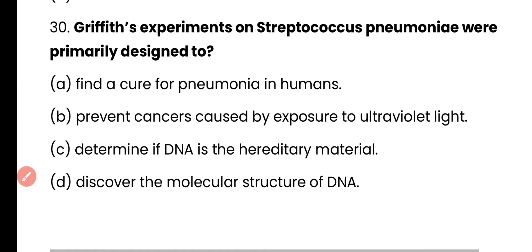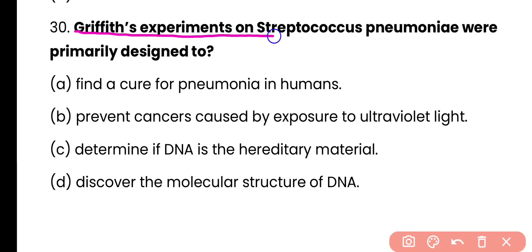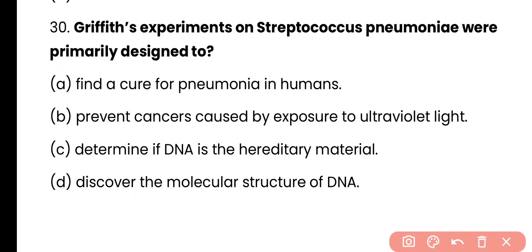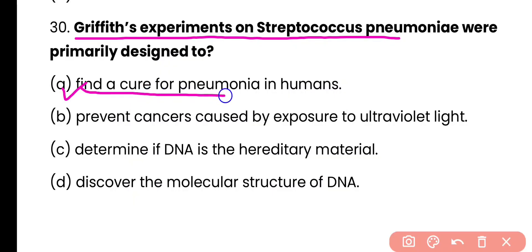Question number 30. The Griffith experiment on Streptococcus pneumoniae was primarily designed to: find a cure for pneumonia in humans, prevent cancer caused by UV light, determine if DNA is hereditary material, or discover the molecular structure of DNA? Correct answer is option A. The Griffith experiment was initially designed to find a cure for pneumonia in humans — he was trying to build a vaccine against pneumonia, and accidentally discovered the transformation principle.